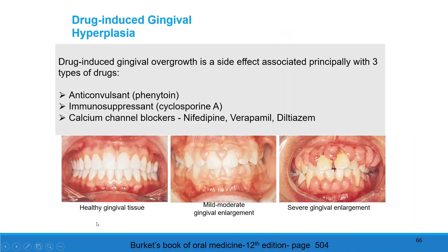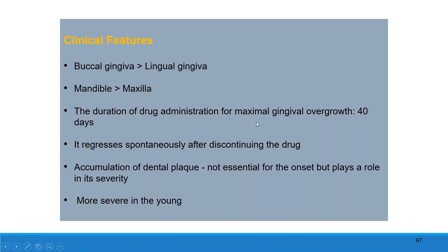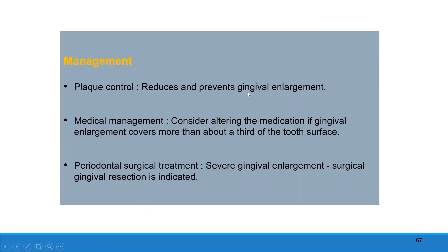Drug-induced hyperplasia. Drugs responsible for gingival hyperplasia include anticonvulsants such as phenytoin, immunosuppressants such as cyclosporin A, and calcium channel blockers such as nifedipine, verapamil, or diltiazem. Clinical features: more commonly seen in buccal gingiva than lingual; mandible more affected than maxilla. Duration of drug administration determines maximal growth. As the drug is discontinued, inflammation reduces. Dental plaque accumulation is also associated, with more severe effects in young patients. Treatment involves plaque reduction, considering changing the medication to an alternative drug, and periodontal surgical treatment — severe gingival enlargement can be removed with gingivectomy.